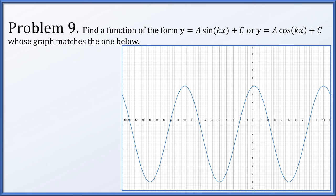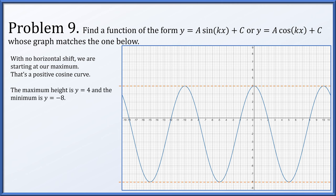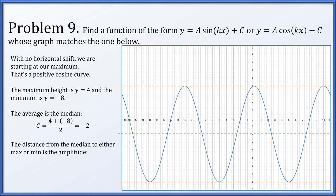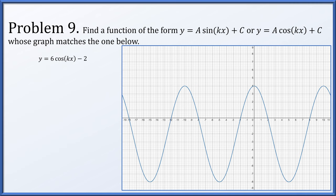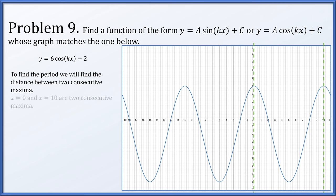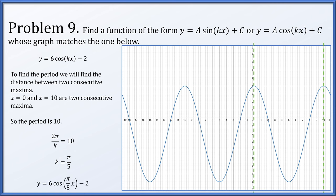In problem 9, we're going to find a function — either a scalar multiple of sine or cosine — that matches the given graph. We have no horizontal shift and we're starting at our maximum, so that's a positive cosine curve. The maximum height of 4 and the minimum height of -8 give an average (the median) of -2. The distance from the median to either extreme is the amplitude, which is 6. So we have 6·cos(kx) - 2. Two consecutive maxima occur at x = 0 and x = 10, so the period is 10, giving 2π/k = 10 and k = π/5. Therefore y = 6·cos(π/5·x) - 2.